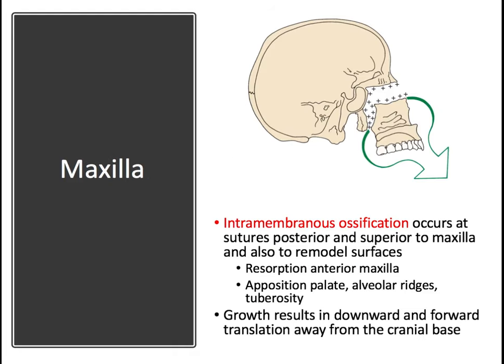Here's a summary: the cranial vault has intramembranous growth (mesenchymal is synonymous) at sutures and surfaces, because there's no cartilage in the cranial vault. The cranial base has endochondral growth at the synchondroses, plus a nominal amount of intramembranous growth laterally to widen it. The maxilla has purely intramembranous growth at both sutures and surfaces — no cartilage. The mandible mostly gets intramembranous growth at its surfaces, but also endochondral growth at the condyle pushing it downward and forward — a very important growth mechanism. There are no sutures in the mandible, so that intramembranous growth is purely at the surfaces.